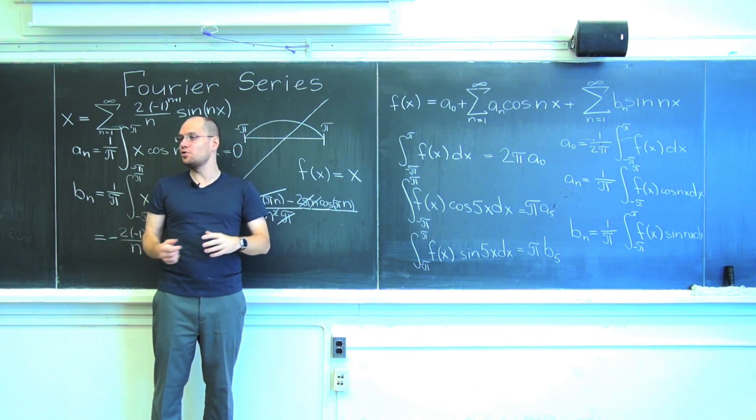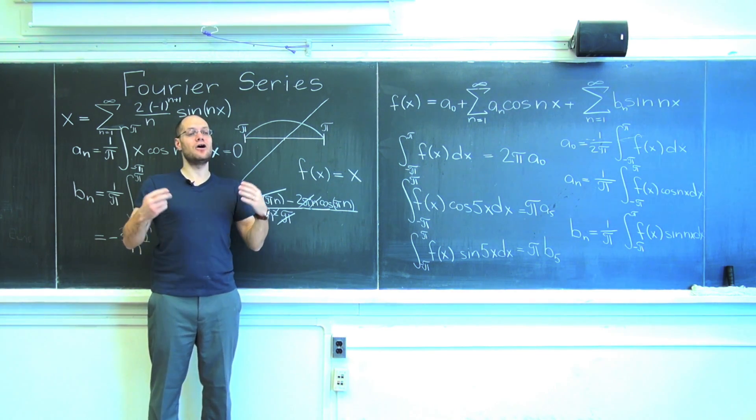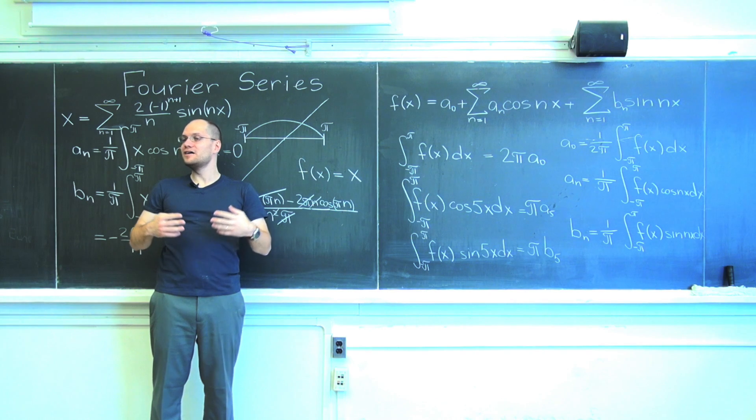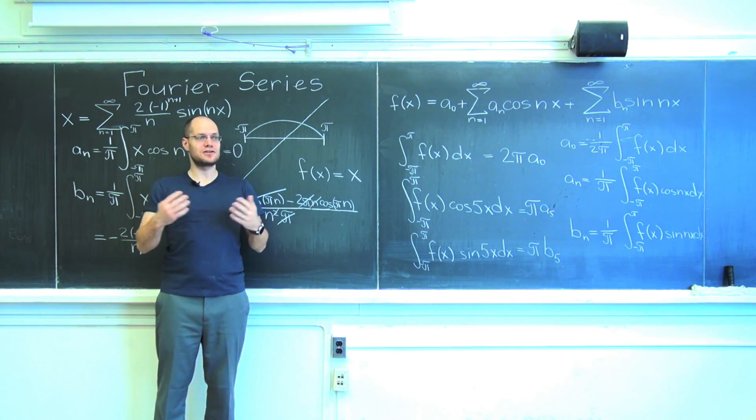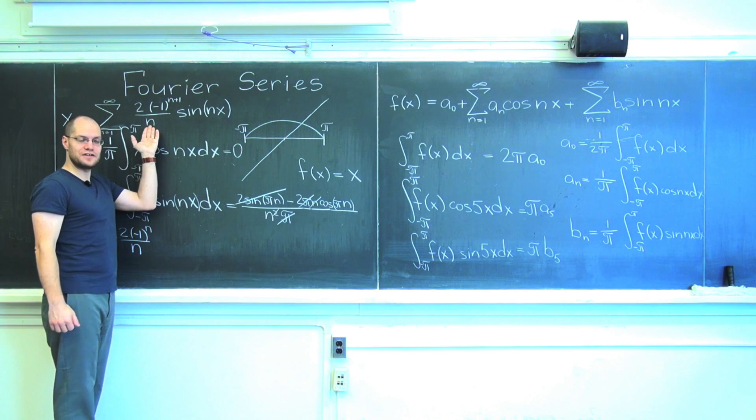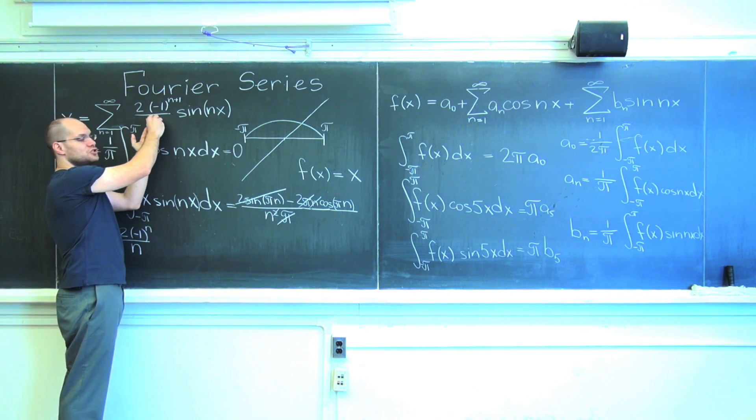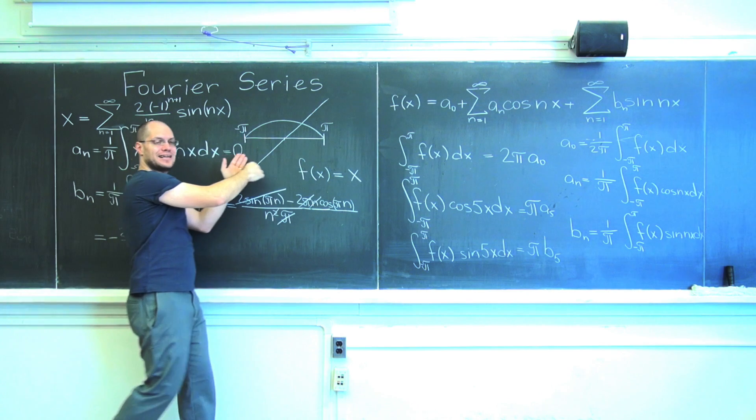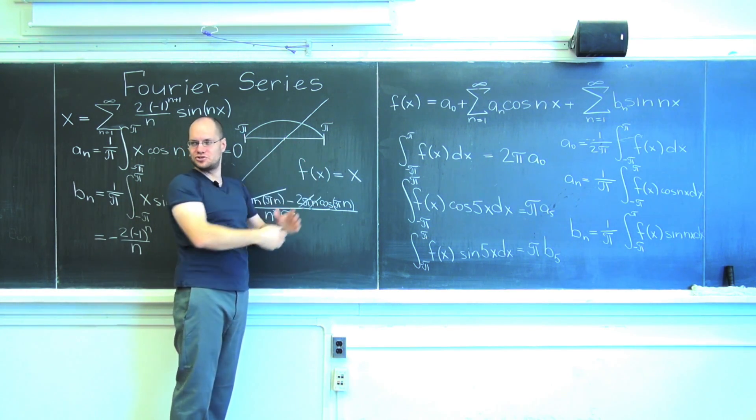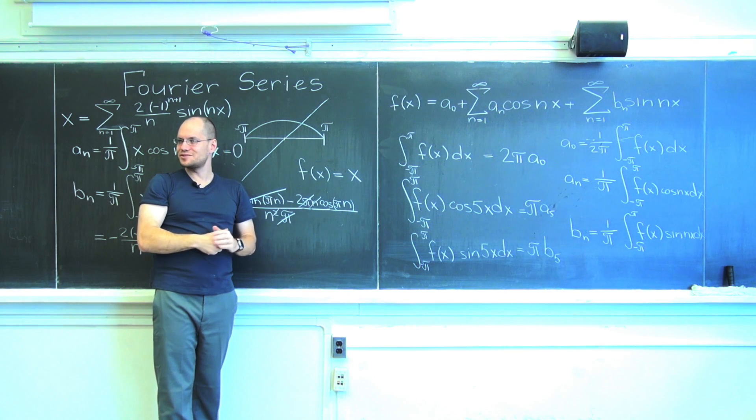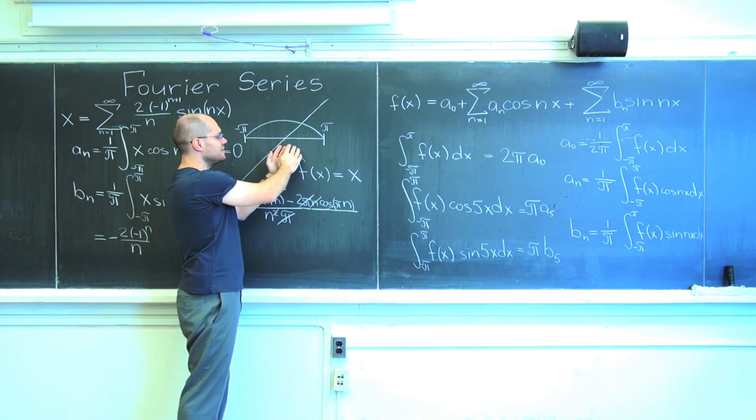And so the rate of decay in the coefficients tells you exactly how continuous your function is. It's a very nice aspect of this whole theory. And it also allows you to talk about fractional continuity. For example, if you consider a function whose coefficients decay is one over n to two and a half, you can say that it has maybe two and a half or minus one continuous derivatives.